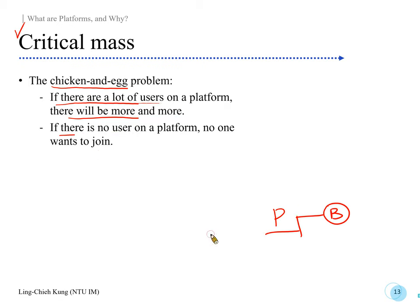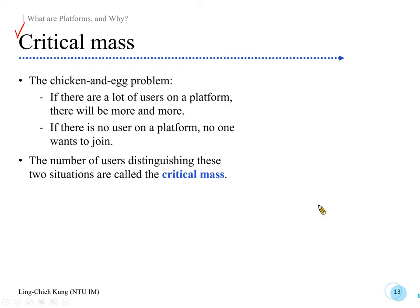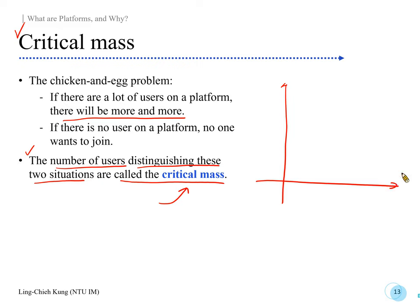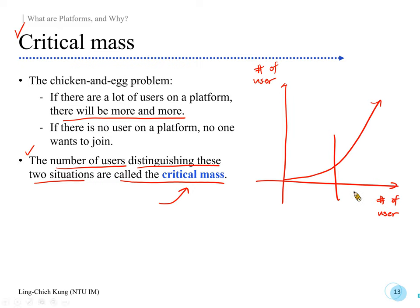The number of users that distinguishes these two situations is called the critical mass. Critical mass is a term regarding the number of users we hope to reach, so that afterwards users attract new users. If we draw a graph with the number of users on both axes, when you acquire a few users and eventually the number goes up, that particular stage is called your critical mass.